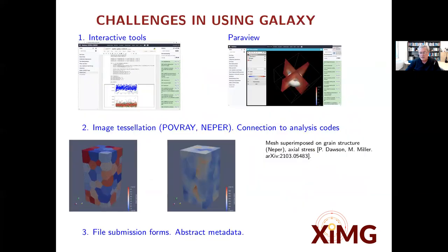A few challenges that we're addressing at the moment that might interest some of you are a fairly large reliance on interactive tools. At the moment, we have built notebooks into the Galaxy server, and we also have access to ParaView, a visualization framework. We are also building connections to modelers, including mesh constructions and data tessellation. This is useful to people that work on plasticity and need to investigate, for example, the distribution of stresses in a polycrystalline material, and also ways to standardize file submission forms for people that are using this already.